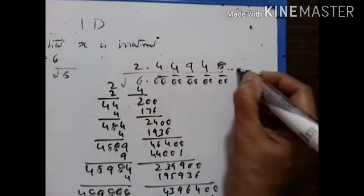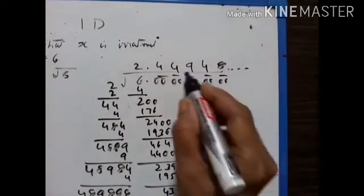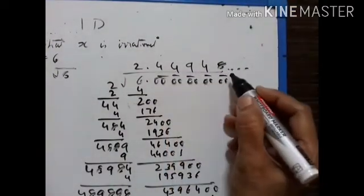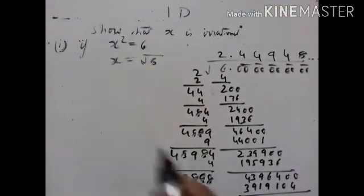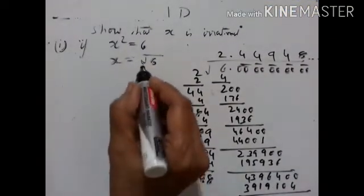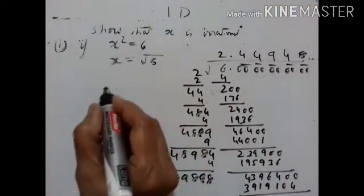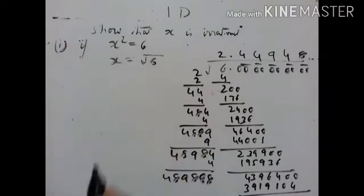This will go on — it is non-terminating and non-recurring. Therefore, square root of 6 is an irrational number.